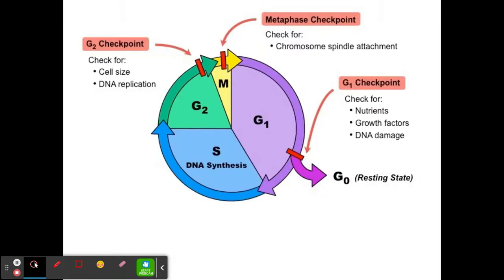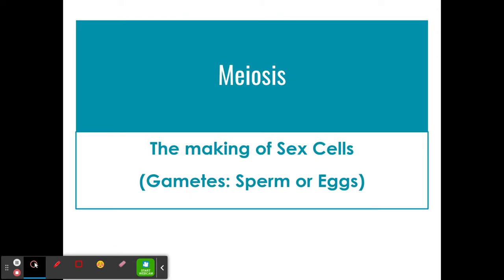Along the cell cycle, there are checkpoints that allow the cell to continue through the process. However, cancer cells don't follow these rules — they keep dividing uncontrollably, which is what causes tumors to form.